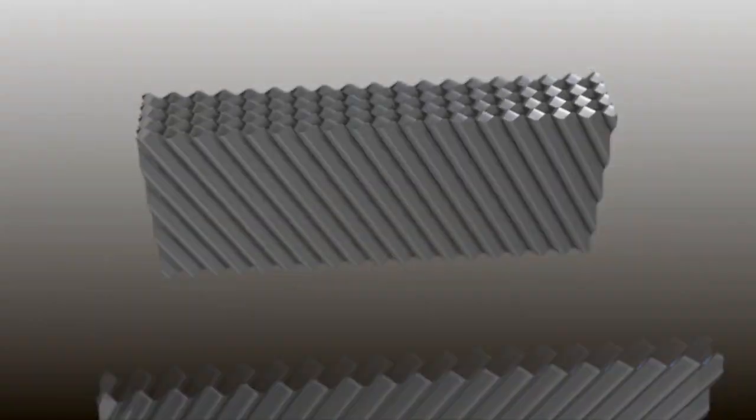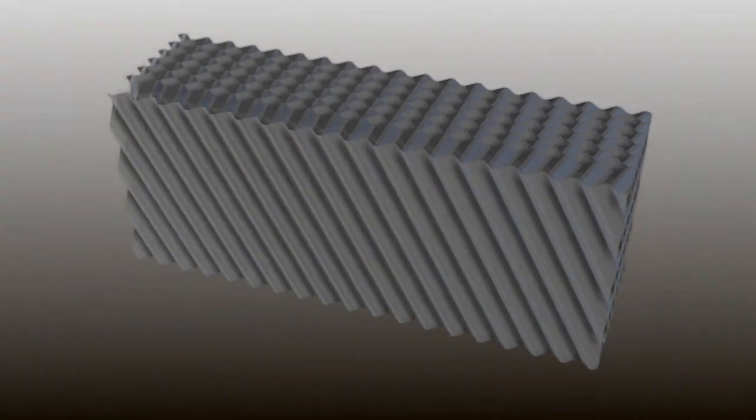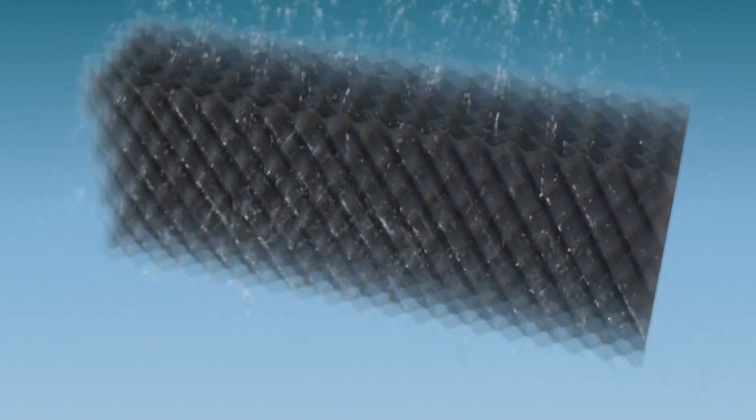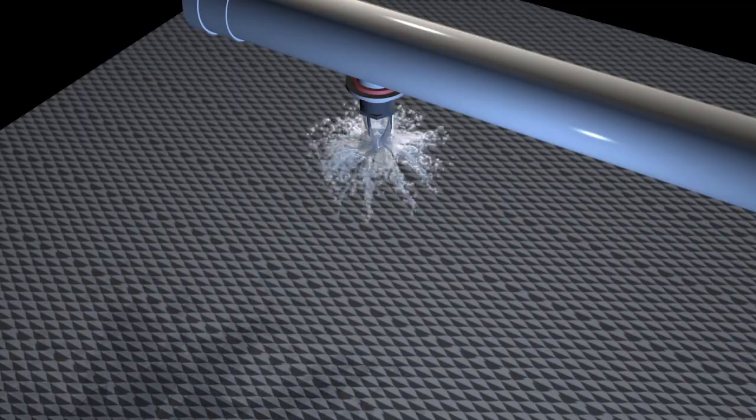An equal volume of water should flow through each flute. Too little water flow leads to the air doing little or no work. Too much water flow floods the flute, restricting air flow.